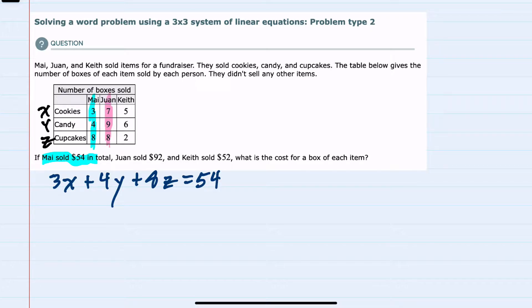Moving to Juan, the same calculations. This time, Juan sold 7 cookies, so 7 times X, and 9 candy, so 9 times Y, and again, 8 cupcakes, so 8Z, and Juan's total is $92.